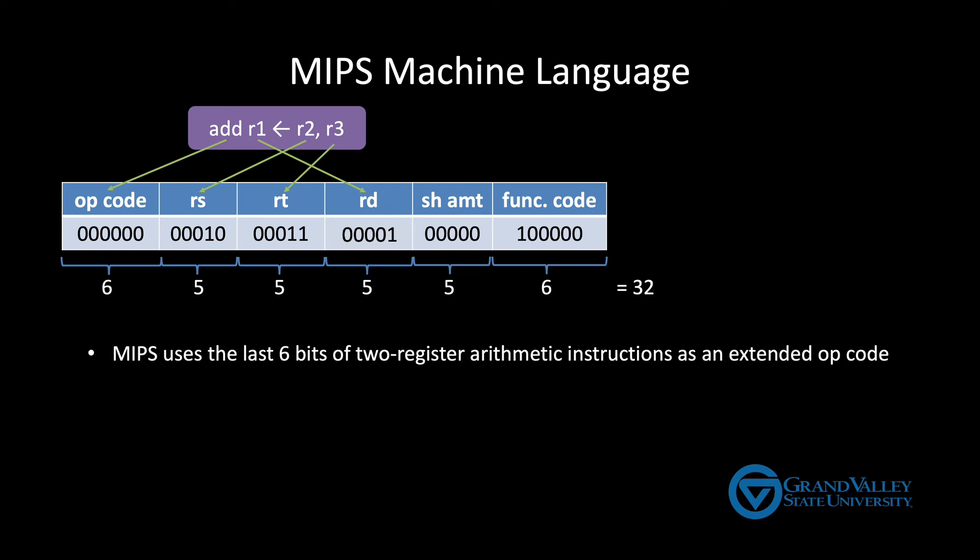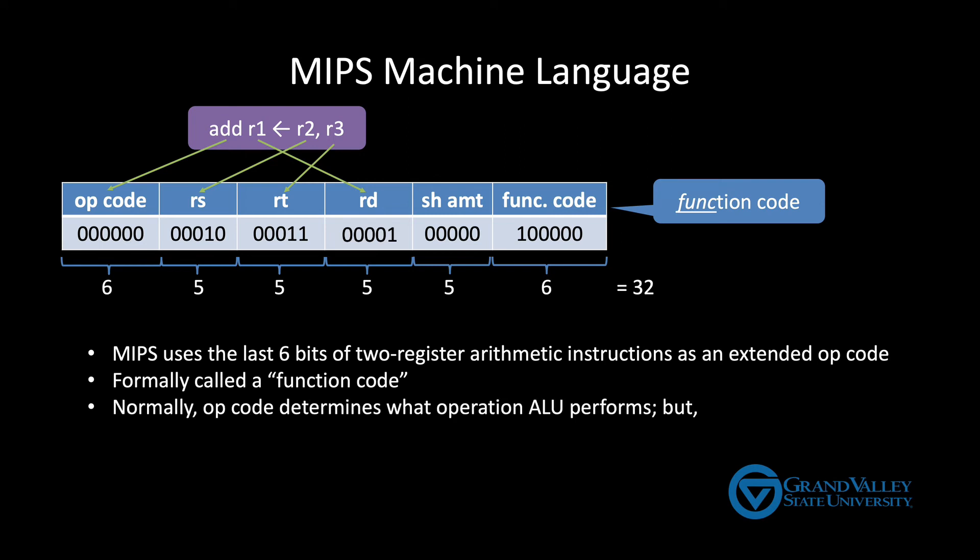It uses the last 6 bits of these 9 unused bits as an extended opcode, something they call a function code. Normally, the opcode is what tells the ALU what operation it should be performing, but when the opcode is zero, as it is for every arithmetic instruction that reads from two registers, then the CPU uses the function code to tell the ALU what to do. So, in other words, the way we make more than 64 different operations available in our instruction set without using more opcode bits in every instruction is to borrow some otherwise unused bits from only certain instructions.